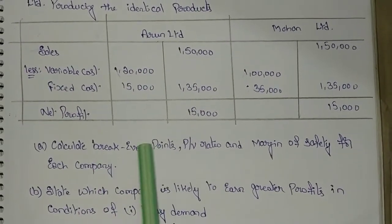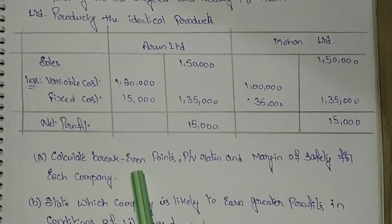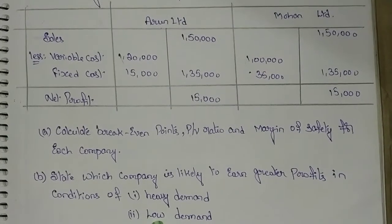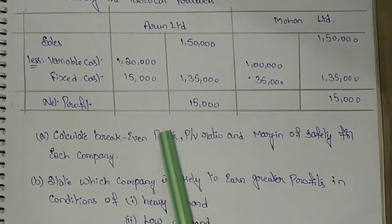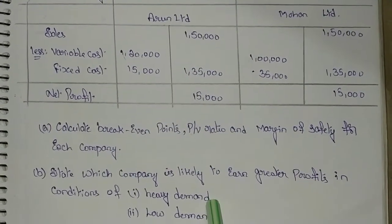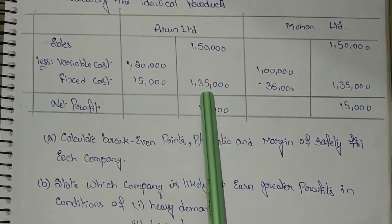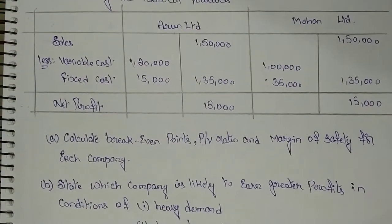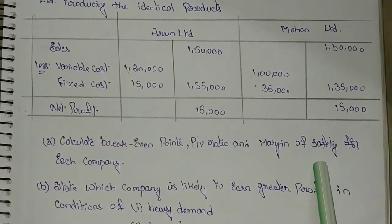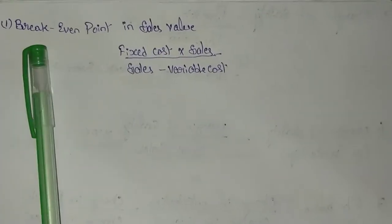They are asking us to calculate breakeven point, PV ratio and margin of safety for each company — both Arun Limited and Mohan Limited. After calculating these three, we have to explain which company is likely to earn greater profits in two conditions: when there is heavy demand for the products, and when there is low demand for the products.